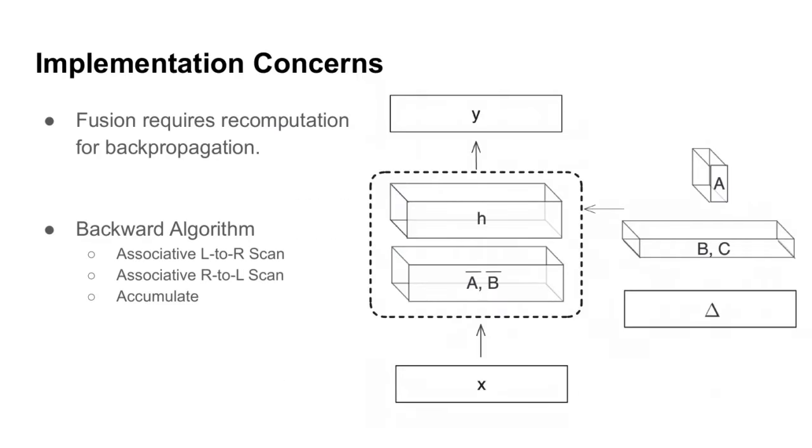This fast implementation does carry with it some additional considerations that one needs to be careful about. Specifically, because we fused the operations, we can no longer use autodifferentiation. And therefore, during the backwards pass, we need to recompute the hidden representations that are no longer stored by the autodifferentiation engine. This will entail having both a left-to-right scan for recomputation and a right-to-left scan in order to get the gradients. This right-to-left scan can similarly be computed with the same parallel-associative scan that we covered earlier.